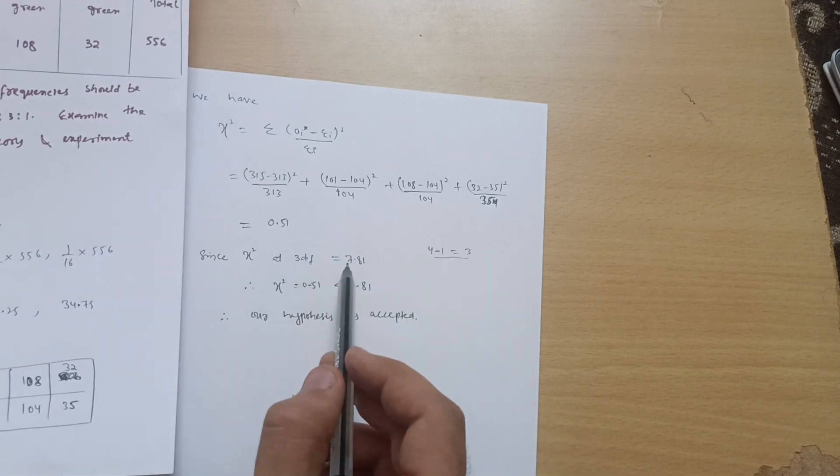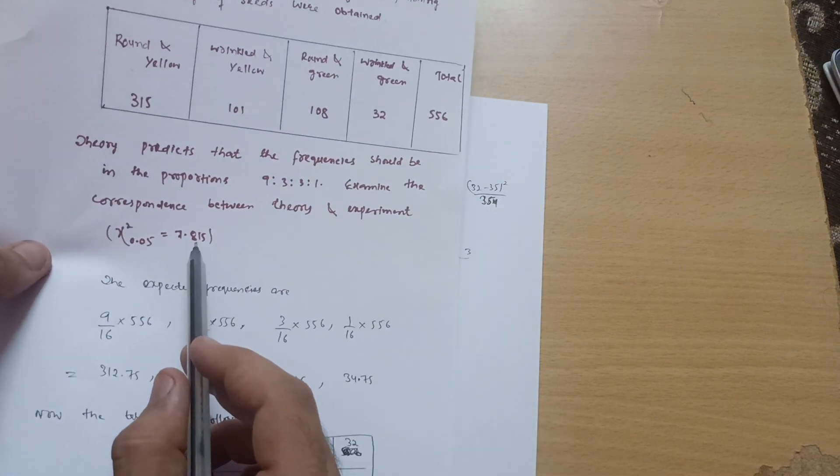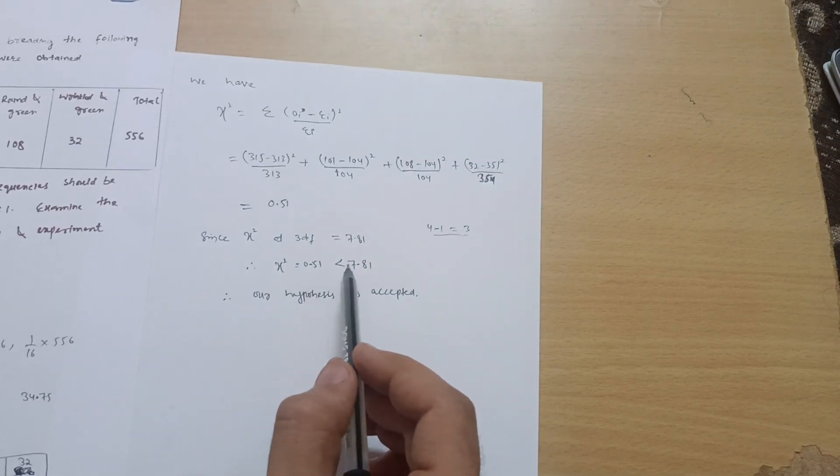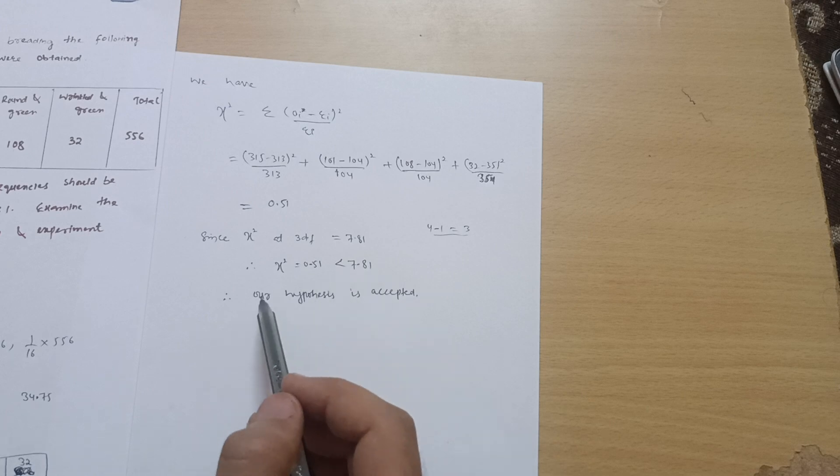So at three degrees of freedom you are having the value 7.815, but we are getting the value 0.51. So it is obviously less than 7.815, therefore we can conclude that our hypothesis is accepted in this case.